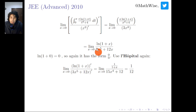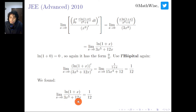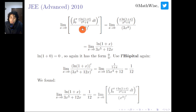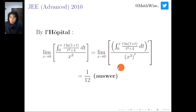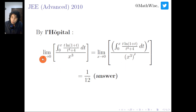The limit of ln(1+x) over 3x to the power of 5 plus 12x as x approaches 0 is 1 over 12. Since this equals the result of our first L'Hôpital application, by applying L'Hôpital twice we get the final answer: the limit as x goes to 0 of the original function is 1 over 12.